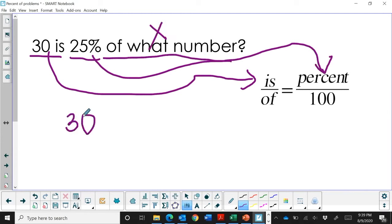So 30 is the 'is'. The 'of' is our unknown. 25% out of 100.